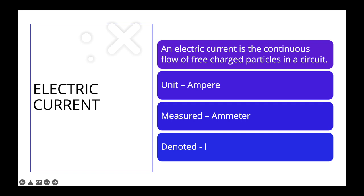Why do we need to know about electrons, protons, and neutrons? Because in electrotherapy we deal with electric currents, and electric current is nothing but the flow of charges. Electric current is defined as the continuous flow of free charged particles in a circuit — and those particles are the electrons.